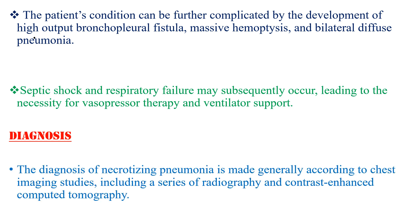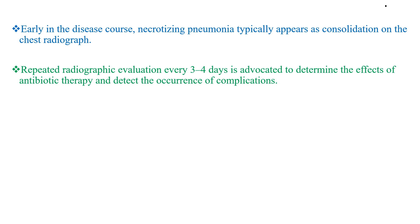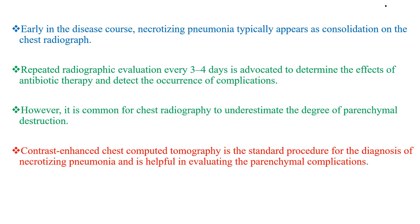The diagnosis of necrotizing pneumonia is made generally according to chest imaging, especially chest X-ray and computed tomography CT scan, particularly contrast-enhanced. Early in the disease course, necrotizing pneumonia typically appears as consolidation on the chest radiograph. Repeated radiographic evaluation every 3-4 days is advocated to determine the effect of antibiotic therapy and detect complications. However, it is common for chest radiograph to underestimate the degree of parenchymal destruction, so contrast-enhanced CT scan is the standard procedure for diagnosis and is helpful in evaluating parenchymal complications.